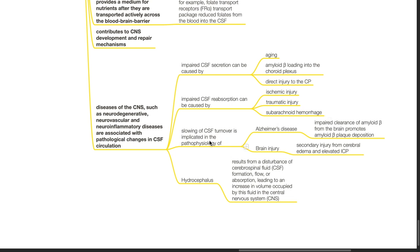Slowing of CSF turnover is implicated in the pathophysiology of Alzheimer's disease and brain injury. In Alzheimer's disease, impaired clearance of amyloid beta from the brain promotes amyloid beta-plaque deposition. In brain injury, slowing of CSF turnover contributes to secondary injury from cerebral edema and elevated ICP.